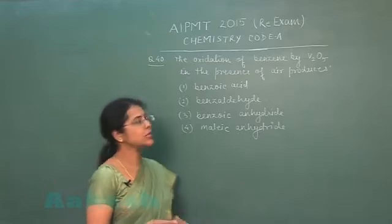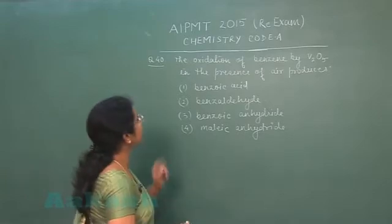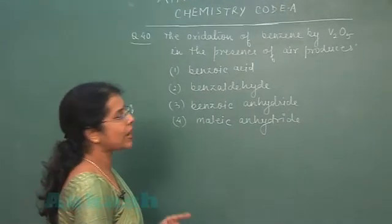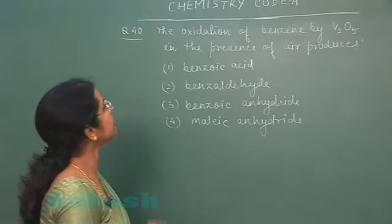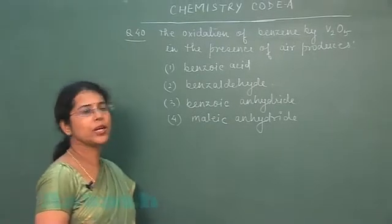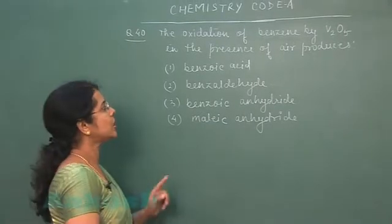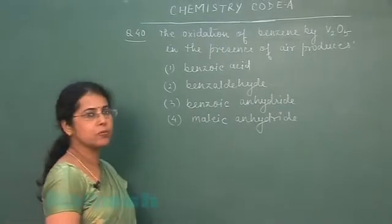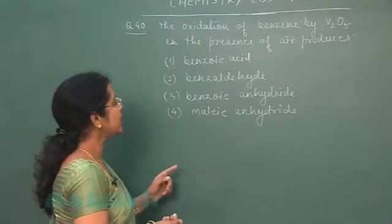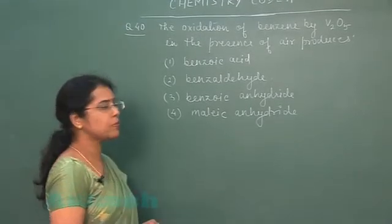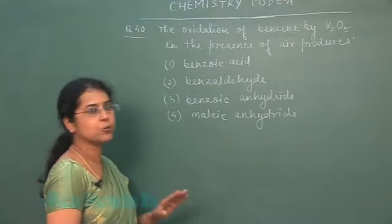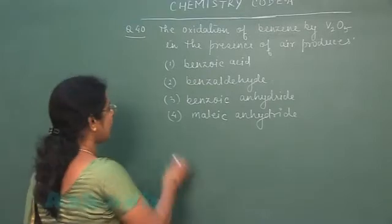Question number 40: The oxidation of benzene by vanadium pentoxide in the presence of air produces which product? The four options are: first, benzoic acid; second, benzaldehyde; third, benzoic anhydride; and fourth, maleic anhydride.